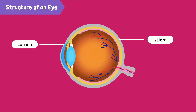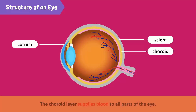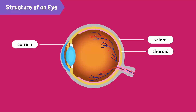As we go deeper, the next layer is called the choroid layer, which supplies blood to all parts of the eye. It extends to the colored part in front of the eye.